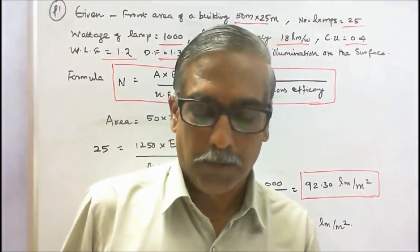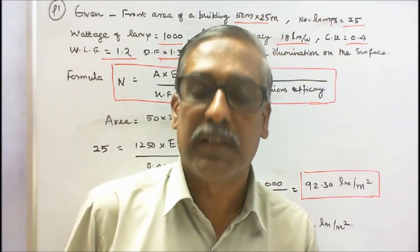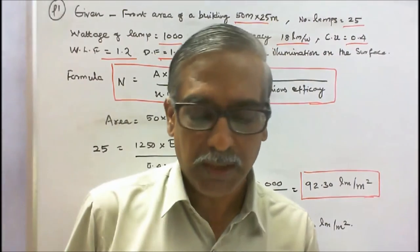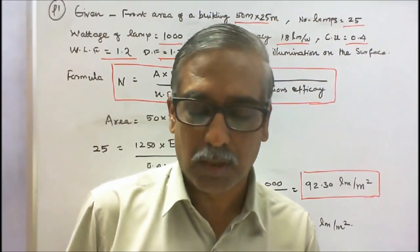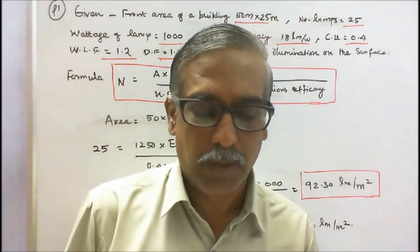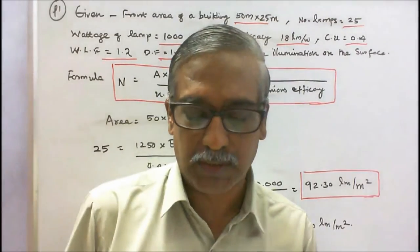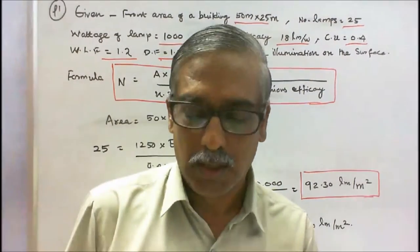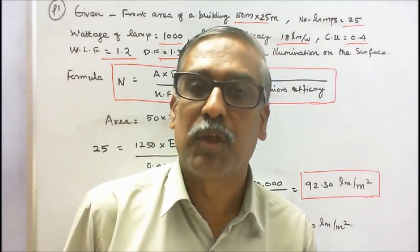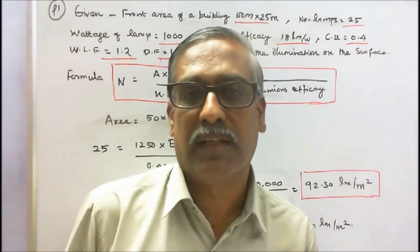Problem 1: The front of a building, 50 meters by 25 meters, is illuminated by 25 lamps of 1000 watts each, arranged so that uniform illumination on the surface is obtained. Assuming a luminous efficacy of 80 lumens per watt, coefficient of utilization = 0.4, waste light factor = 1.2, and depreciation factor = 1.3. Determine the illumination on the surface.